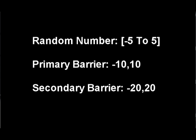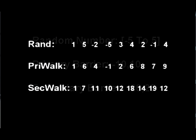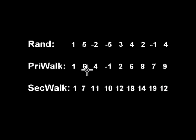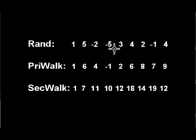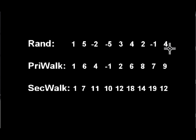Now that was a bit of a mouthful, but this should help make the concept clearer. Say a random number generator produces a number between minus 5 and 5, and we limit the movement of the primary walk to between minus 10 and 10, and the secondary walk to between minus 20 and 20. Say the primary walk is at 6 currently, and the generator throws a minus 2 — 6 minus 2 puts us at 4. Now the generator throws a minus 5, so the primary walk value is 4 minus 5, or minus 1. If we're at 7 and the random number is 4, 7 plus 4 is 11, which is 1 over the barrier 10, so the value becomes 10 minus 1, or 9.